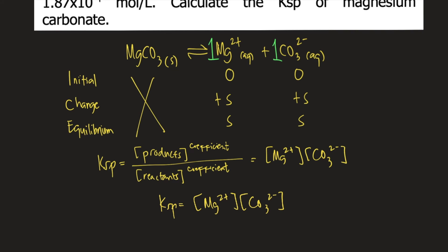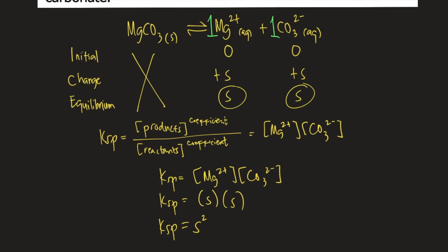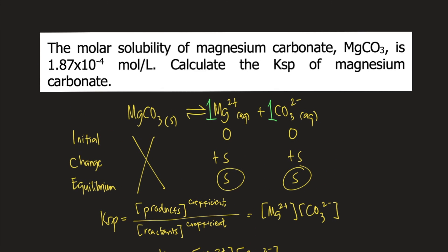Then we substitute the equilibrium variables. For Mg2+ we have S, and for carbonate we also have S. So S times S, our Ksp is equal to S squared. S here stands for solubility, and we are given the solubility in the problem, which is 1.87 times 10 raised to negative 4.